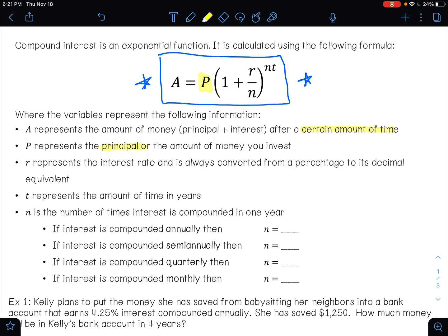n is the number of times that interest is compounded in one year. So if we say that interest is compounded annually, then n is one. If interest is compounded semi-annually, then n is two. If interest is compounded quarterly, then n is four. And if it is compounded monthly, then n is 12.